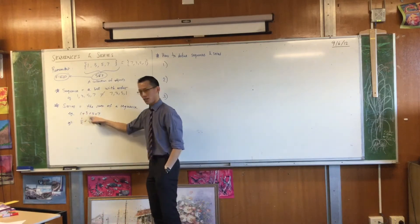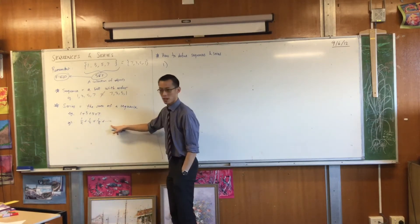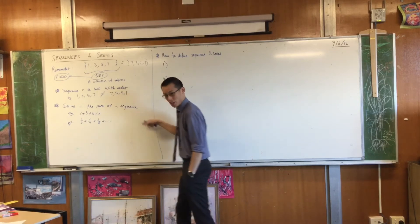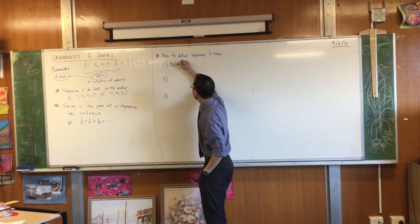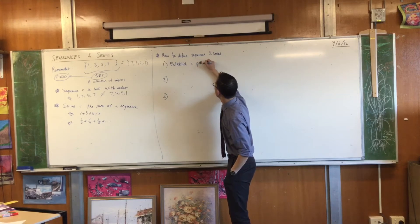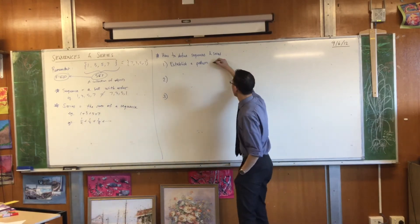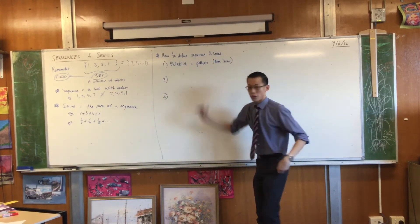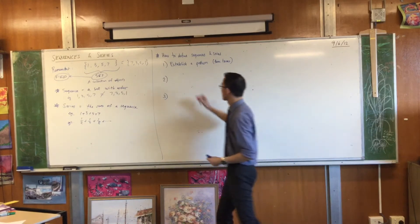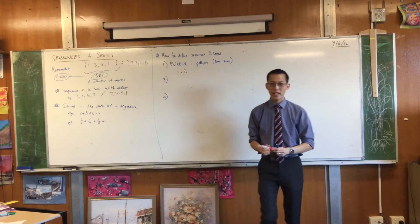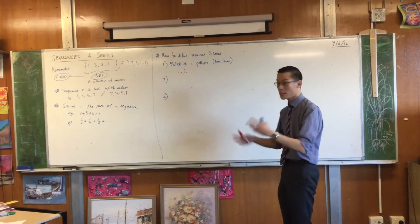If I list enough terms, you can see the pattern — I don't need to tell you what the rest are. What would the next term be? 1 over 16. What would the next one be? 1 over 32. And 1 over 64, and so on. You've got enough terms here to establish a pattern. Generally speaking, it's agreed that you need three terms in order to do that. I'm going to give you a quick example that shows you why it's three.